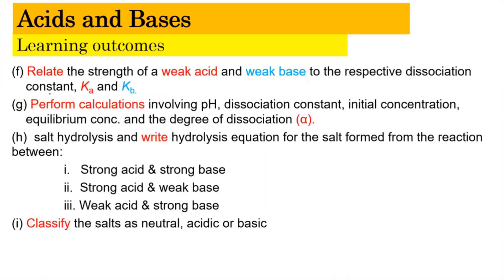In this video we're going to learn how to relate the strength of the weak acid as well as the weak base to their respective dissociation constant. For the weak acid we're going to look into Ka, representing acid, meanwhile for the weak base we're going to look into Kb, B representing the base. Next we also want to learn how to perform calculations involving pH, dissociation constant, initial concentration, equilibrium concentration, as well as the degree of dissociation. The learning outcomes F and G will be covered in this video, which is part 3.